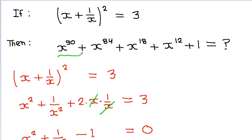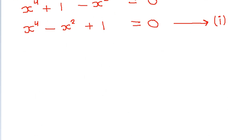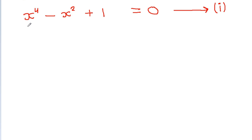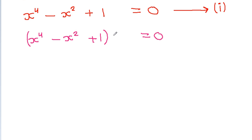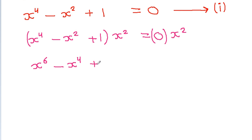Now, looking at the target expression, the differences between powers are: 90 - 84 = 6 and 18 - 12 = 6. So we multiply Equation 1 by x² to express it in terms of powers of 6, giving x⁶ - x⁴ + x² = 0. Call this Equation 2.